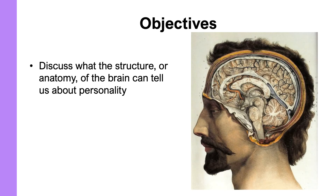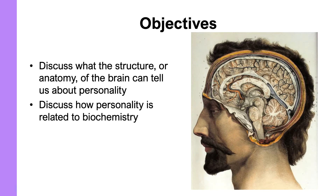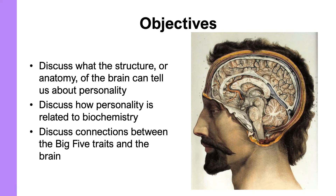In this series of lectures, I will talk about several things, including structure of the brain — anatomy, size, shape, connectivity — and how those things are related to personality, but also how our biochemistry and our neurochemistry is related to personality.